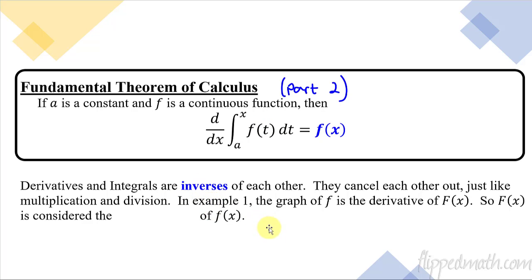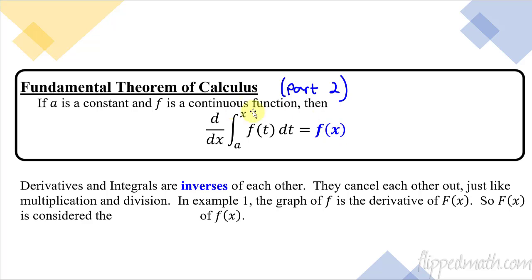In other words, derivatives and integrals cancel each other out — they're inverses of each other, just the way multiplication and division are inverses. Like when solving an equation, if you're multiplying, you'd divide to cancel it. That's what derivatives and integrals do. So derivative of integral gives you the integrand — what was inside — with x plugged in.